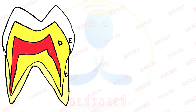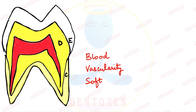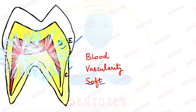Hi everyone, welcome to Dentocent. What can you see exactly in the center of the tooth? A red area that signifies blood — an area rich in vascularity and it is soft tissue. Enamel, dentin and cementum are hard tissues of the tooth. The only soft tissue present in the center of the tooth is called pulp.